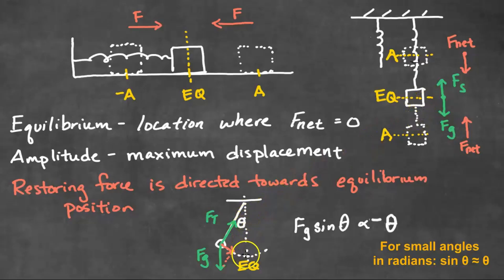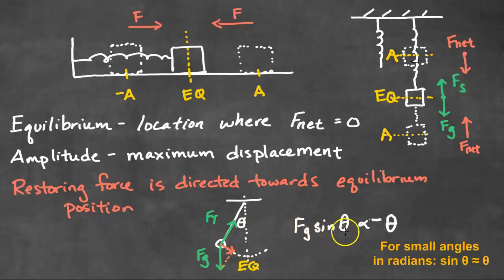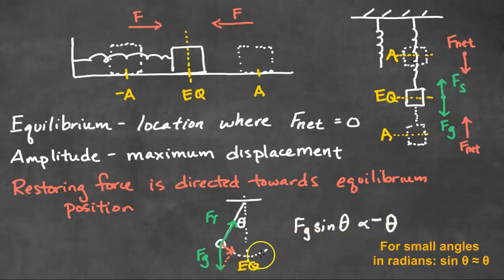Here is a simple pendulum. When I pull the pendulum to the left, it also has a restoring force that comes from one of the components of F_G, specifically F_G sine theta. This restoring force is proportional to the angular displacement. There's a negative sign because as you pull the pendulum to the left, there's going to be a restoring force to the right — so they are in opposite directions.